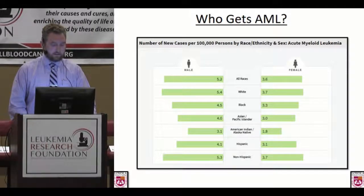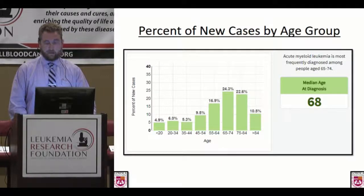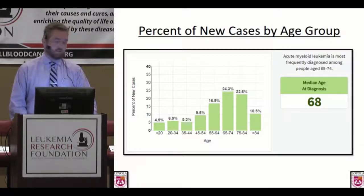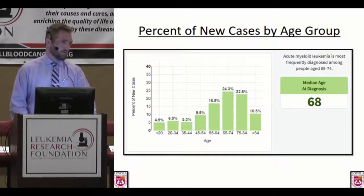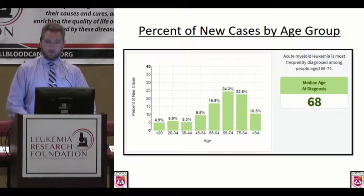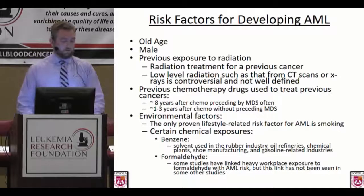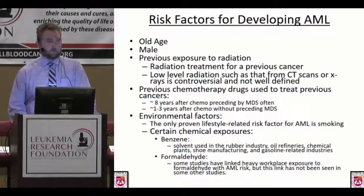Who gets AML? There is a slight predisposition towards males over females and in Caucasians compared to other races, but pretty much anybody can get it — these are small tendencies, not strong trends. This is a disease of the elderly, which is one of our challenges in treating it, particularly in transplants. Unlike acute lymphoblastic leukemia where we see a fair amount of kids, in AML our risk perpetually goes up decade to decade as stem cells reproduce and accumulate mutations. The median age of diagnosis is 68.